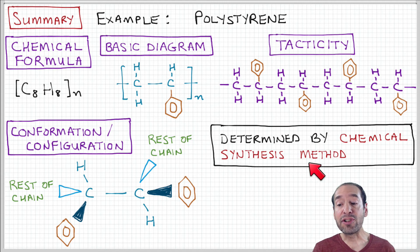And these, again, are determined by the chemical synthesis method. So if we want to understand how to control these features, we need to understand the chemistry and how that affects the placement of these chemical groups along the polymer chain.